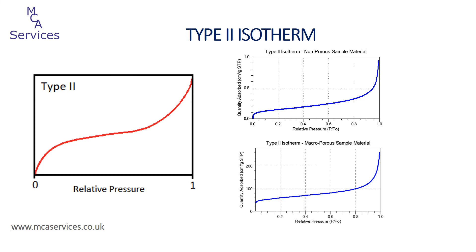It can be quite difficult to ascertain the reason for the high relative pressure adsorption in type 2 isotherms. These examples on the right hand side are real analyses we've undertaken here, and the isotherms do appear very similar. The adsorption volume gives a good indication, this being much higher for the genuine porosity in the lower isotherm. The corresponding desorption isotherms can also help, and we'll cover that in the next presentation.